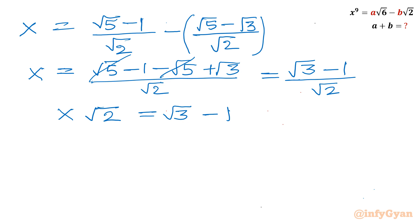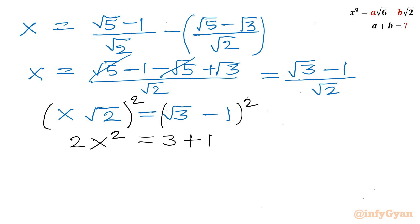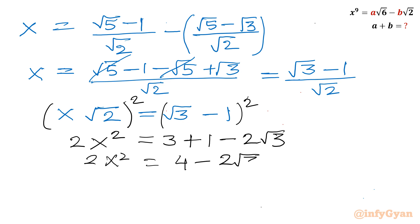Consider squaring both sides, so I will write power 2. So it will become 2x squared equal to the a minus b whole square formula: a squared is 3, b squared is 1, and minus 2ab, so minus 2 root 3. It is 2x squared equal to 4 minus 2 root 3. The equation is divisible by 2, I will divide. So x squared will be equal to 2 minus root 3. This is our x squared value.